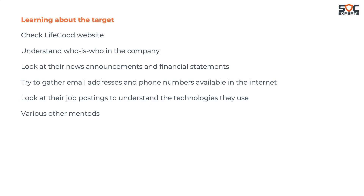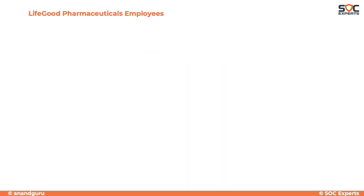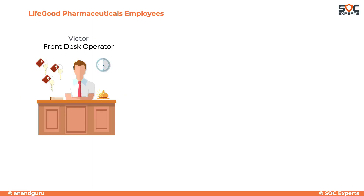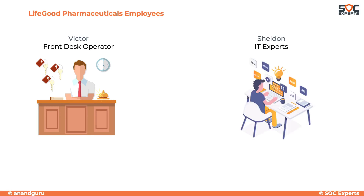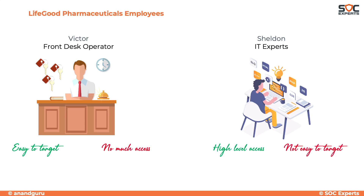With the collected information, the attackers identify two people in the company through whom they can gain access to the company's network. One is Victor, who works as a front desk operator, and the other is Sheldon, who is an IT expert. Compromising Victor will be easy as he is not very cybersecurity-savvy, but he will have limited access. Targeting Sheldon would give high-level access but he cannot be easily fooled. The attackers decide to take the easy route and target Victor.